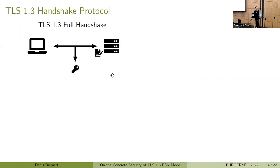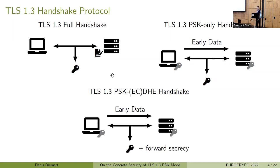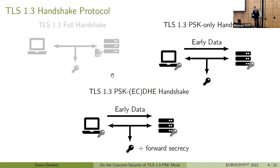The handshake of TLS comes in basically three variants. First, there is the full handshake, which uses public key certificates for authentication — the variant most of you associate with TLS. Then there is the PSK mode, mainly used for session resumption, allowing a more efficient handshake by the client and server sharing a symmetric key beforehand, and even allowing the client to send early zero-RTT application data. In addition, there is a PSK-ECDHE variant that adds a Diffie-Hellman key exchange to provide forward secrecy for the session keys. We will only focus on the PSK handshakes today.